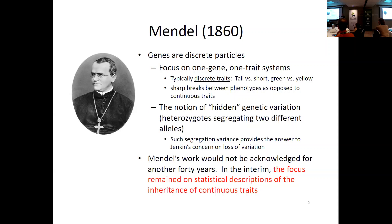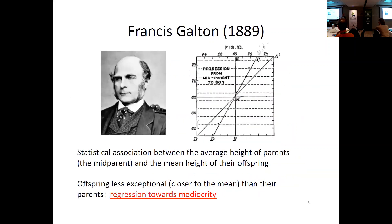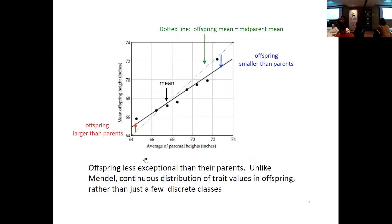These views of Darwin and Mendel, which we now see as complementary, were in fact the cause of much controversy early on. With Mendel's work unacknowledged for 40 years, the focus remained on Darwin and statistical ways to describe data. One of the first people to examine this was Francis Galton, who among other things invented the mountain tent. Galton looked at the association between parents and their offspring and noticed that when he plotted average parent height against offspring height and fit a regression, the slope was less than one.